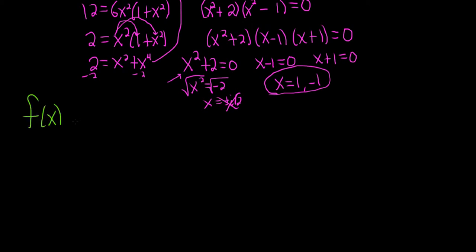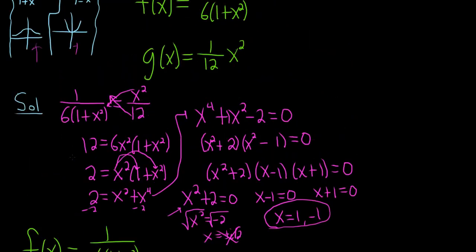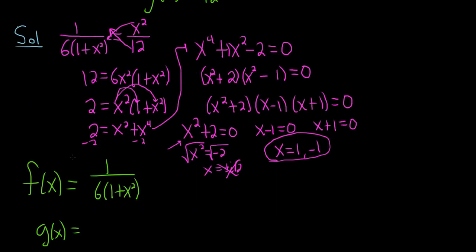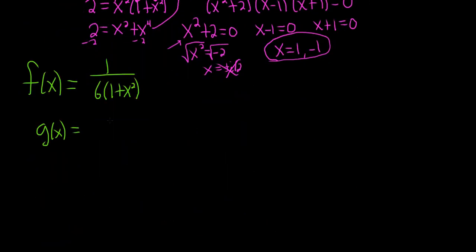So we had f of x equals 1 over 6, parenthesis 1 plus x squared. And then g of x equals, I think it was 1 12th. Yeah, 1 12th x squared. Good, 1 12th x squared. So 1 over 12, x squared.